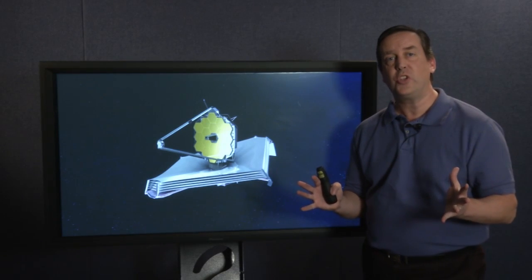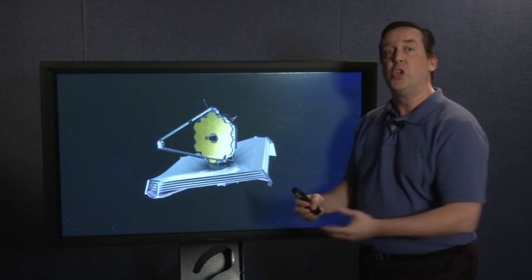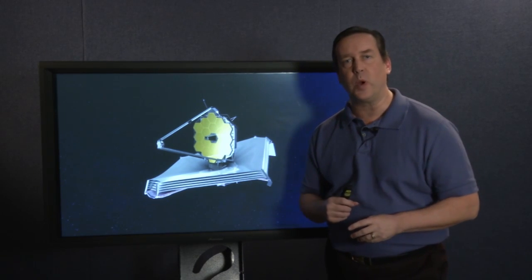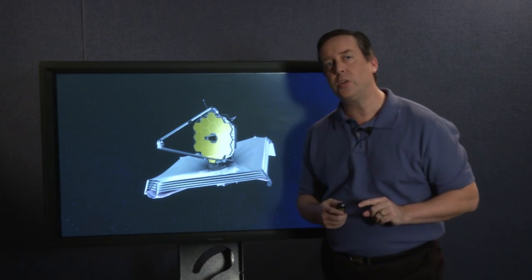The James Webb Space Telescope will have the sensitivity necessary with this giant mirror to observe in infrared wavelengths. It's not just the size of the James Webb Space Telescope that will enable it to do cutting-edge science. It's also its location.